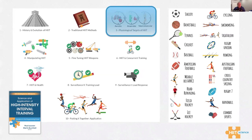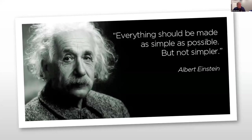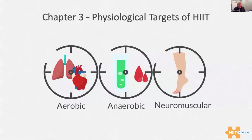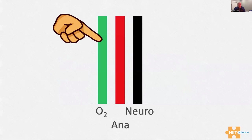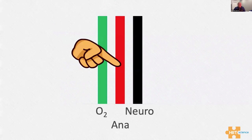Coming back to chapter three — understanding the physiological targets we get from a HIIT session. We took Einstein's quote: everything should be made as simple as possible, but not simpler. We break down a HIIT session into its three main components: you often get an aerobic response — heart and lungs; you often get an anaerobic lactic response because it's high intensity; and then you often get a neuromuscular/musculoskeletal response.